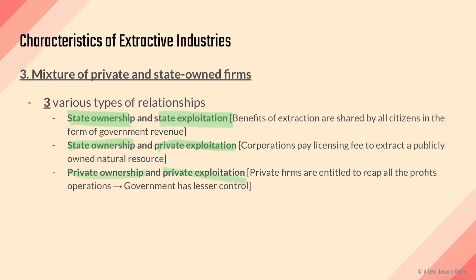The last case is the worst case — private ownership and private exploitation, meaning the government simply gives full ownership to the firm to control whatever resource it is. They can exploit as much as they want, destroy the land to get the resources, and are entitled to reap all the profits. The government has no control and the country typically does not benefit, as most revenue will be repatriated back to the developed country.